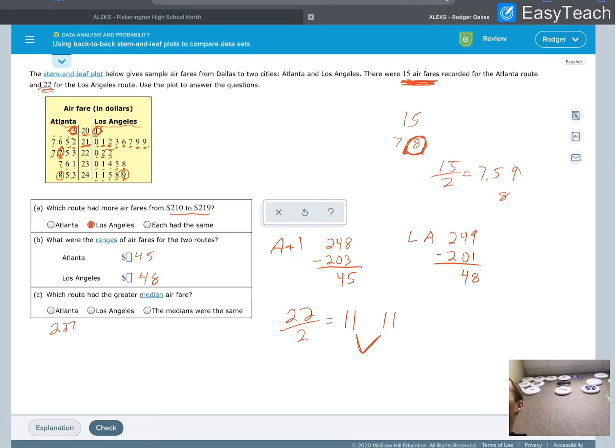Oh, good for us. Those two values right there, I need to split them, but they're the same. Those are at 222. So which route had the greater median airfare?